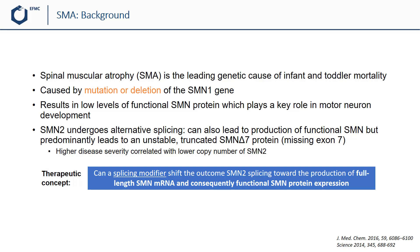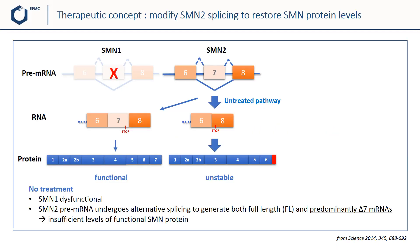The idea for the therapeutic concept was to find a splicing modifier that would shift the outcome of SMN2 splicing toward the production of full-length SMN mRNA, and consequently functional SMN protein expression. Since it was at that time not known what factors ultimately influenced the splicing of that gene, this concept was realized in a phenotypic approach. This slide illustrates the respective pre-messenger RNAs coming from the gene, the RNA, and the proteins.